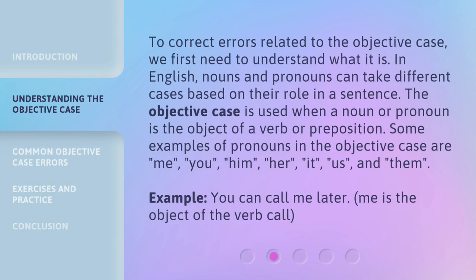To correct errors related to the objective case, we first need to understand what it is. In English, nouns and pronouns can take different cases based on their role in a sentence. The objective case is used when a noun or pronoun is the object of a verb or preposition. Some examples of pronouns in the objective case are: me, you, him, her, it, us, and them.